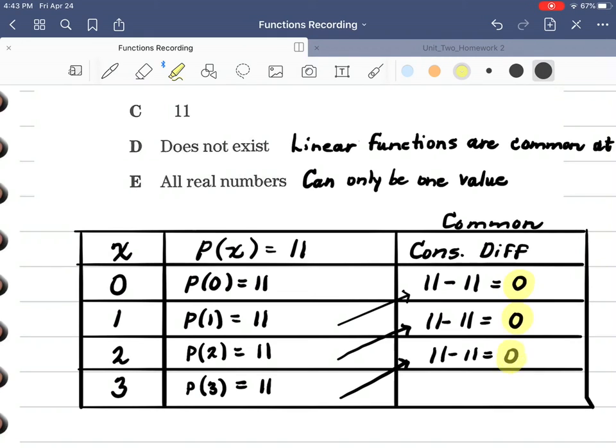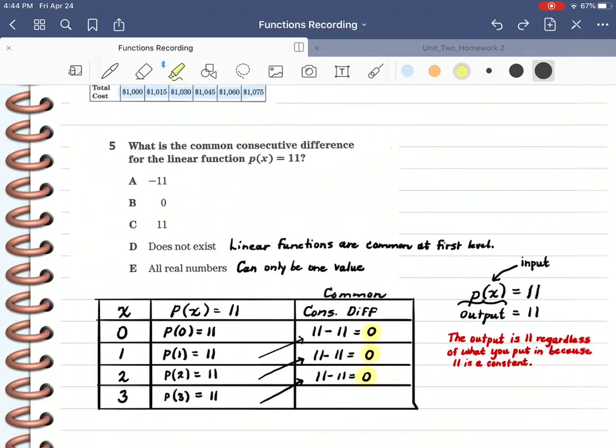And I'll tell you this. Anytime your function is constant, this will happen because there's nothing out there to vary the output. The 11 is constant and that's all you have. So anytime you have that constant value, your consecutive differences will be 0 and it is linear.